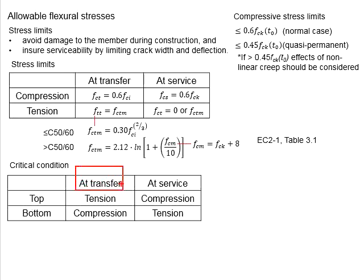For the transfer stage, the top part of the beam is more likely to undergo tension while the bottom part is likely to undergo compression. Therefore, it is checked against the tensile stress limit and compression stress limit at the top and bottom of the beam at the transfer stage respectively.